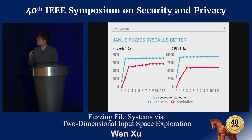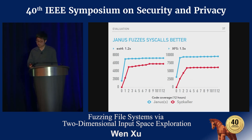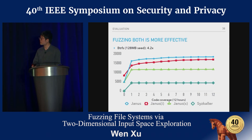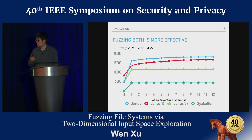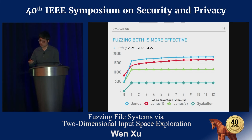Janus also fuzzes syscalls better — fuzzing only syscalls without mutating the image, Janus performs 1.2 to 1.5 times better on popular file systems. In the overall evaluation where both inputs are fuzzed simultaneously, Janus achieves higher coverage than mutating only image or only syscall alone. It performs 4.2 times better than syzkaller on btrfs, considered one of the most complicated file systems widely used. Using a large 128 MB seed further shows Janus outperforms syzkaller in file system fuzzing.